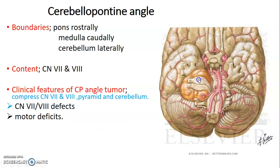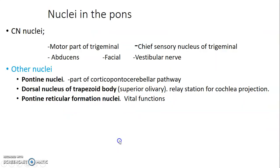You need to read about the 12 cranial nerves and know their functions. For now: the facial nerve mainly innervates the muscles of facial expression, while the vestibulocochlear nerve helps with hearing and balance. CP angle tumors are also characterized by motor deficits if they involve the pyramids. The nuclei located at the pons include cranial nerve nuclei: the motor part of trigeminal, abducens, facial, vestibulocochlear, and the chief sensory nucleus of the trigeminal nerve.